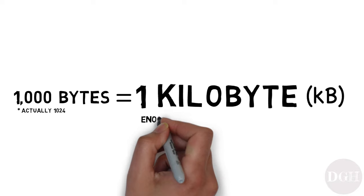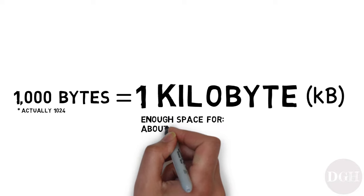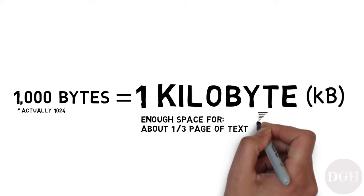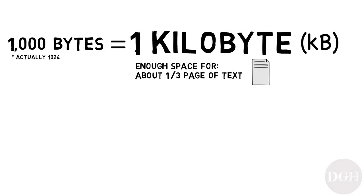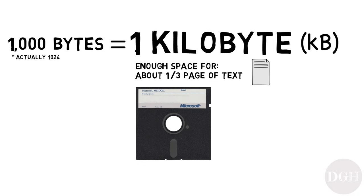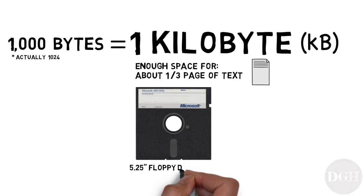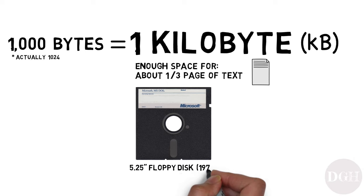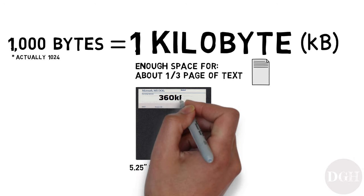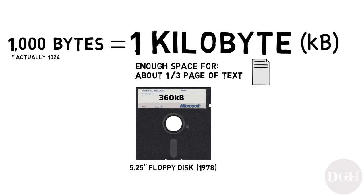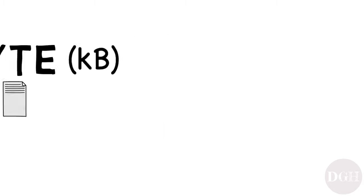One kilobyte is enough space to hold about a third of a page of text. Back in the late 1970s and early 1980s, the five-and-a-quarter-inch floppy disk was a popular storage medium. It could hold 360 kilobytes of information.